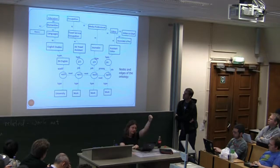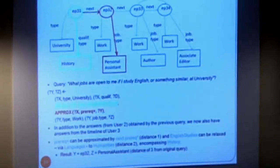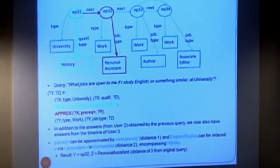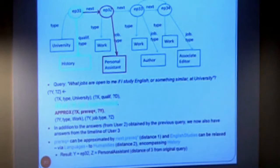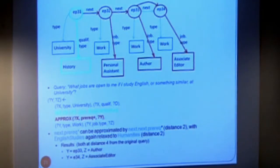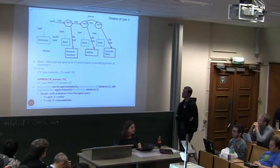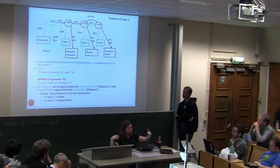English studies relaxed to languages, relaxed to humanities at distance two - grabbing history and languages. Adding the approximation distance of one plus the relaxation distance of two gives distance three. So: no results at distance zero for user three; air travel assistant at distance one; journalist and assistant editor at distance two; personal assistant returned at distance three, applying both operators in tandem. Continuing down through the graph, approximation carries on working, and author and associate editor are returned at distance four.